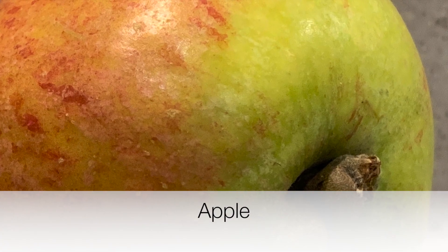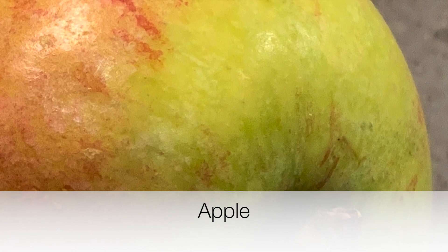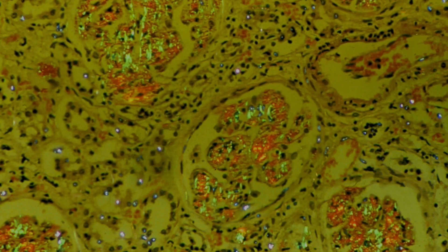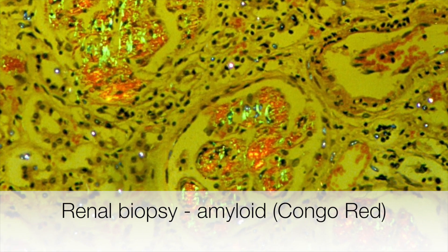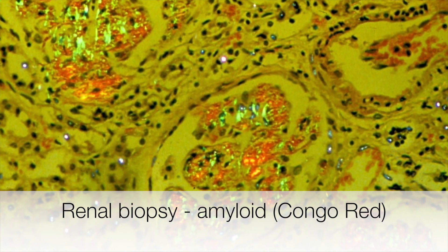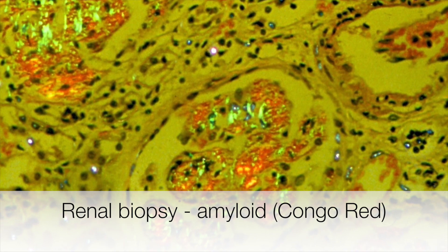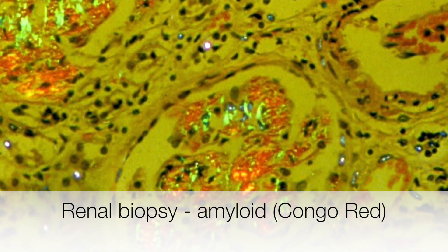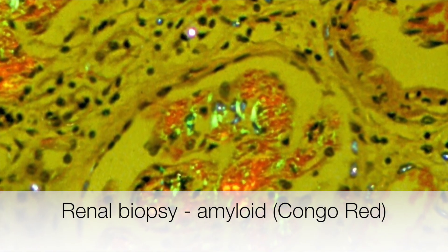Amyloid, when stained with Congo red or Sirius red, shows apple green birefringence when polarised. This renal biopsy is a good example of amyloid. You can see the apple green birefringence in the glomeruli, where the amyloid is deposited.